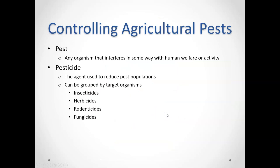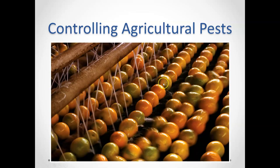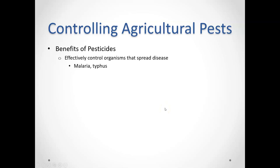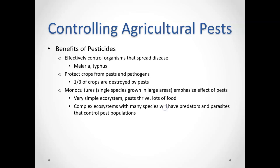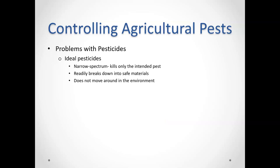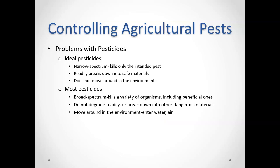Pests are any organism that interferes in some way with human welfare or activity. Typically we deal with pests by spraying them with pesticides. We have insecticides for insects, herbicides for weeds, rodenticides for rats, and fungicides for different types of fungus. We've been able to eliminate all kinds of diseases with them and increase crop yields, since pests are a major cause of crop destruction. However, most pesticides kill everything — including the things we want around — since not all bugs are bad bugs. Pesticides also move around in air and water and can contaminate things.